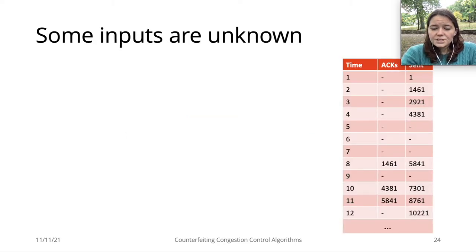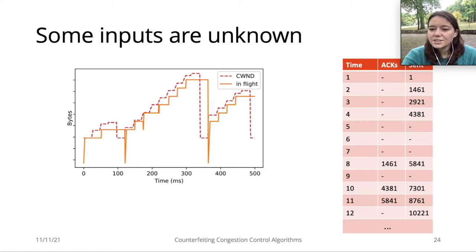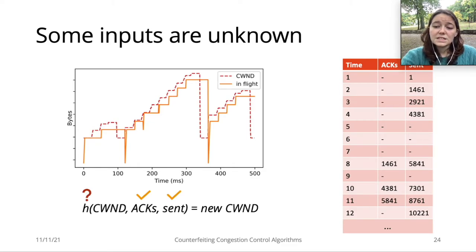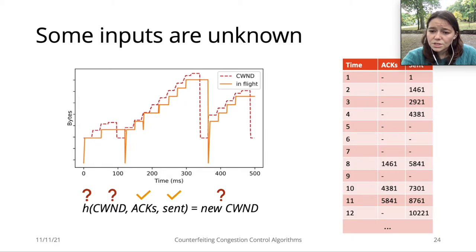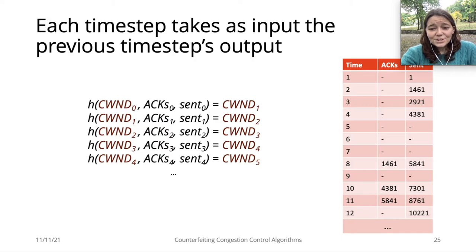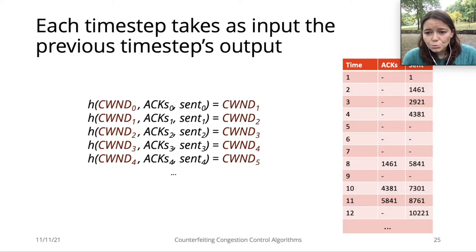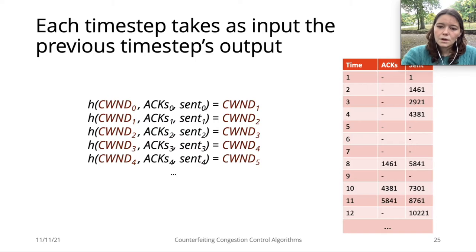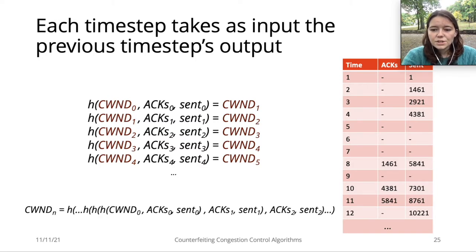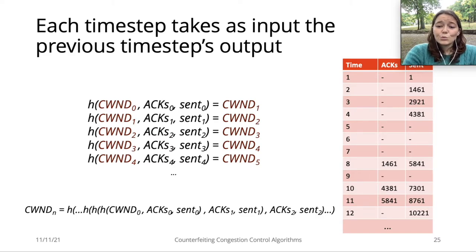The network traces are timestamped records of what the CCA sees in the network. At each timestep, we know which packets were ACKed and which packets were sent, so in practice we know which packets are in flight at any given moment. We have part of the inputs from the trace, but we are missing the previous congestion window on the inputs, and we are missing the output congestion window as well. Fortunately, each timestep's input is the previous timestep's output — for example, the input window on timestep 1 is the output window on timestep 0. So in CCA synthesis, instead of independent execution examples, we have information about the successive composition of the functions we are trying to synthesize, which makes CCAs a more challenging synthesis problem.